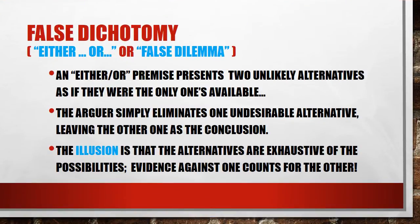Moving on — false dichotomy, sometimes called the either-or fallacy or the fallacy of false dilemma, occurs when you give two unlikely alternatives and present them as though they're the only alternatives available. The arguer eliminates the undesirable alternative and leaves the desirable one as the conclusion. The illusion here is that the alternatives exhausts all your possibilities, so evidence against one counts as evidence for the remaining one.